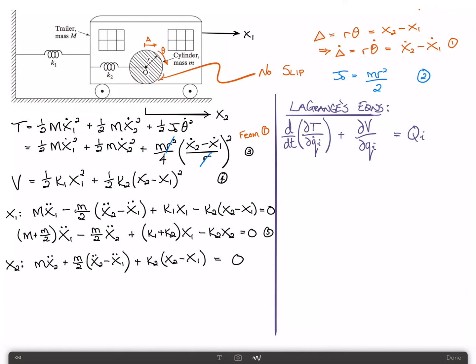A bit of simplification here gives us m plus m over 2, which is 3m over 2, times x2 double dot, minus m over 2 times x1 double dot, plus k2 x2 minus k2 x1 equals zero. And that's the second equation of motion. And we're done.